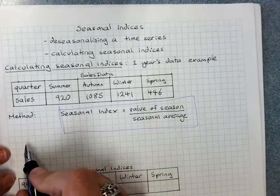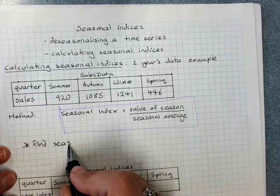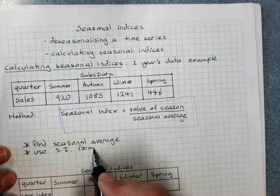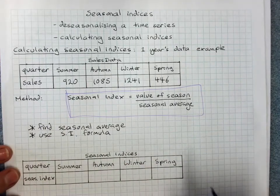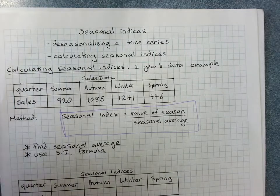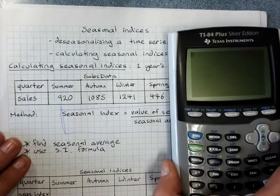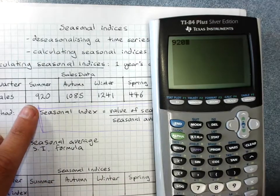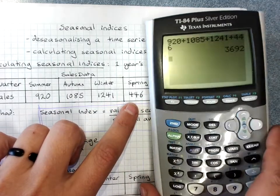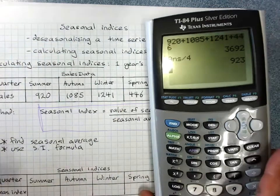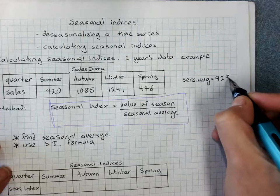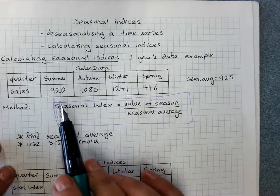First we find the seasonal average. Remember to hit enter before you divide by 4, otherwise order of operations will not be your friend. So the seasonal average is 923. The seasonal index will be each season's value divided by the seasonal average.